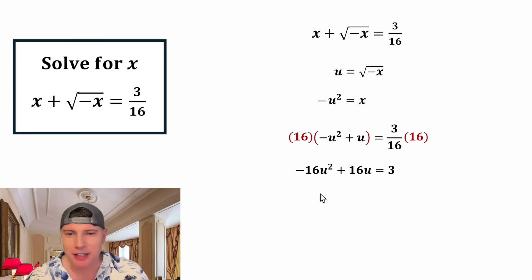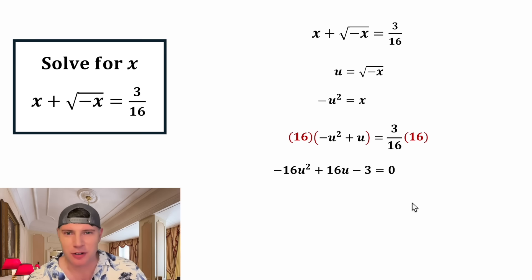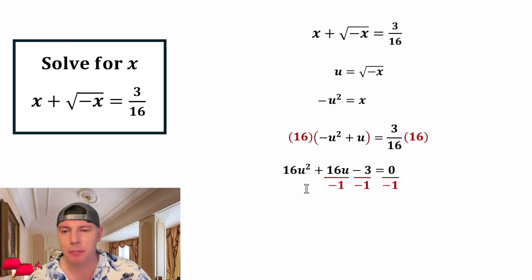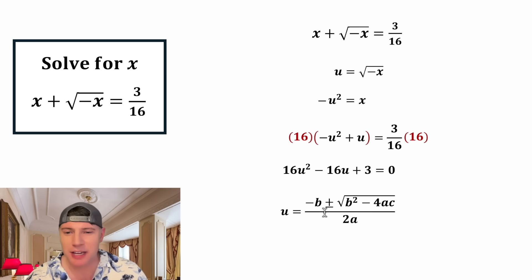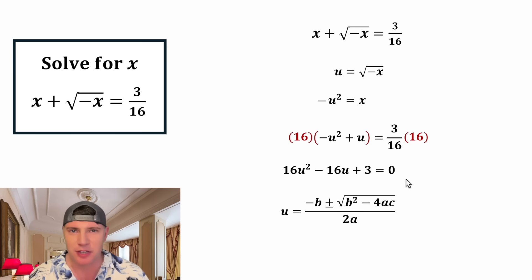Now we have a quadratic. In order to solve this, we want to set the whole thing equal to 0, so let's subtract 3 from both sides, giving us negative 16u squared plus 16u minus 3 equals 0. I don't like the leading coefficient to be negative, so let's divide everything by negative 1. Now we have 16u squared minus 16u plus 3 equals 0. I think we should use the quadratic formula: u equals negative b plus or minus square root of b squared minus 4ac, all over 2a. Where a is 16, b is negative 16, and c is positive 3.